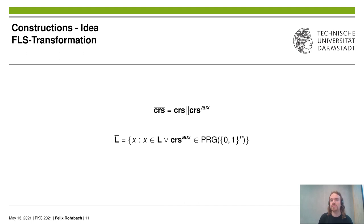In our transformation, we specify instead that the auxiliary string in the output is not pseudorandom. For soundness, we let the malicious prover run on a pseudorandom common random string, using that the malicious prover is bounded and is therefore unable to distinguish these cases.